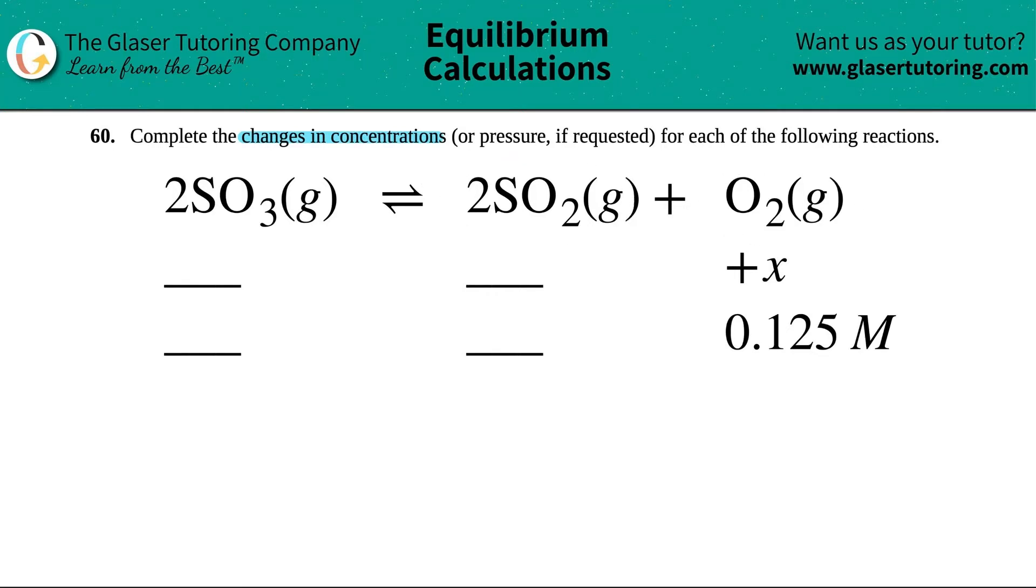I just want to make a point here that we do not know the initial concentrations of the three species or the equilibrium. We're only trying to find out how much each species increased or decreased. That's what these two lines represent. Now let's start with the information that they gave us. They told us that O2 gas changed by plus X resulting in 0.125 molarity.